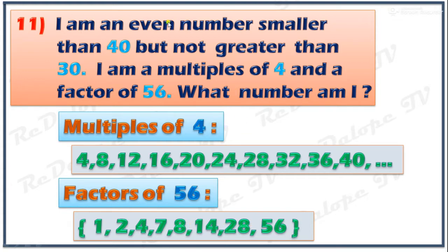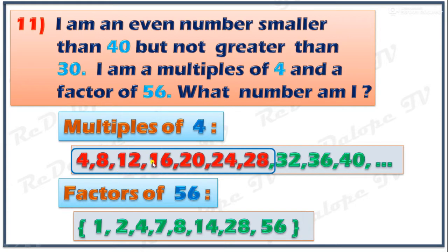Looking at the first statement — I am an even number, smaller than 40 but not greater than 30 — let's find the multiples of 4 that fit: the numbers are 4, 8, 12, 16, 20, 24, 28.